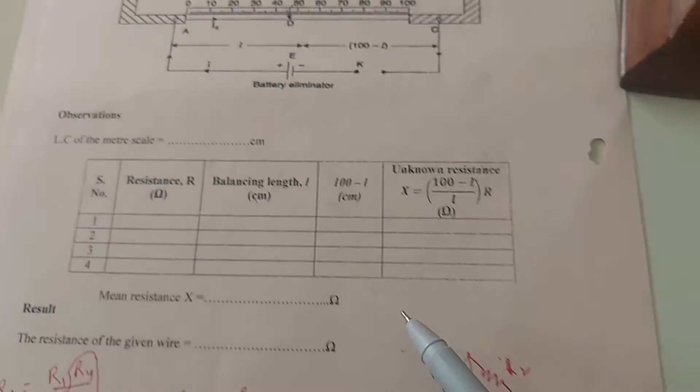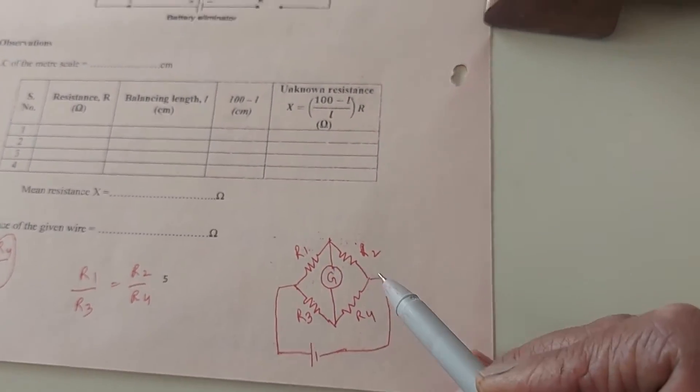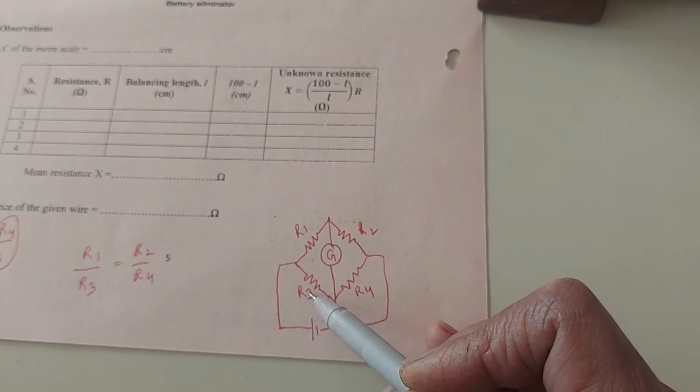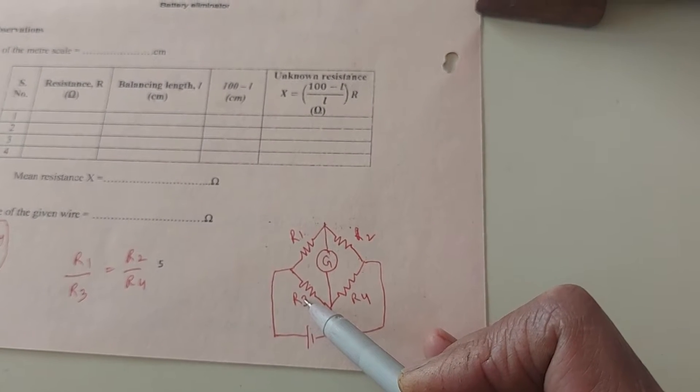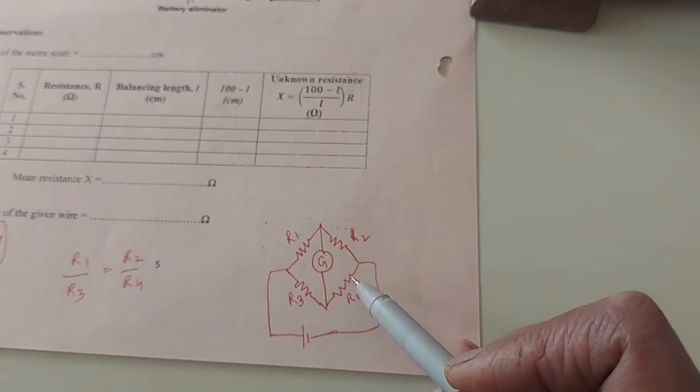This is my resistance box, unknown resistance, resistance on the wire of length L, resistance of the wire of length 100 minus L. So all four arms.